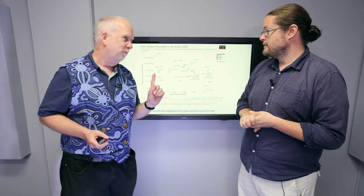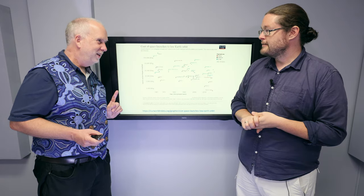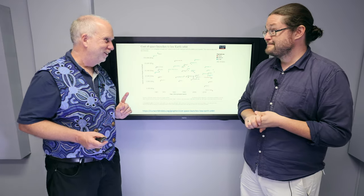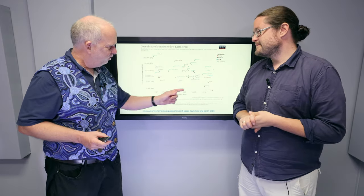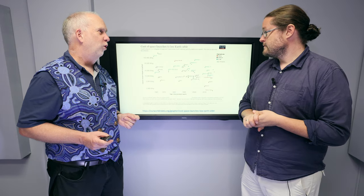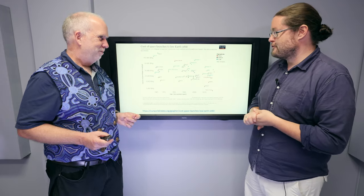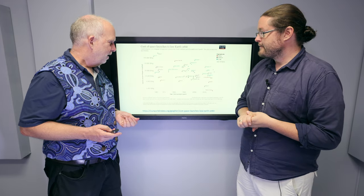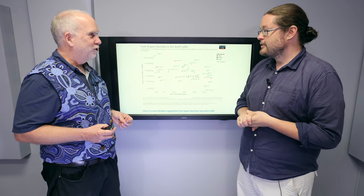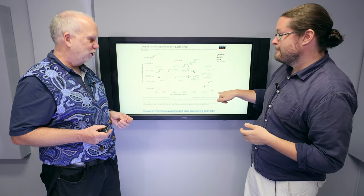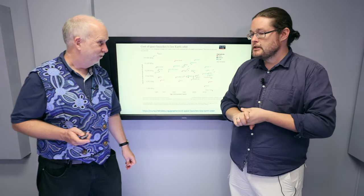So, one company, SpaceX, Elon Musk's company, we'll talk a bit about Elon Musk controversies in a minute, and that's brought the price down per kilo drastically. I mean, not just 20% better, it's 5, 10 times better or more, and hopefully the Starship, if it reaches a prediction, will be even drastically lower than any of us.